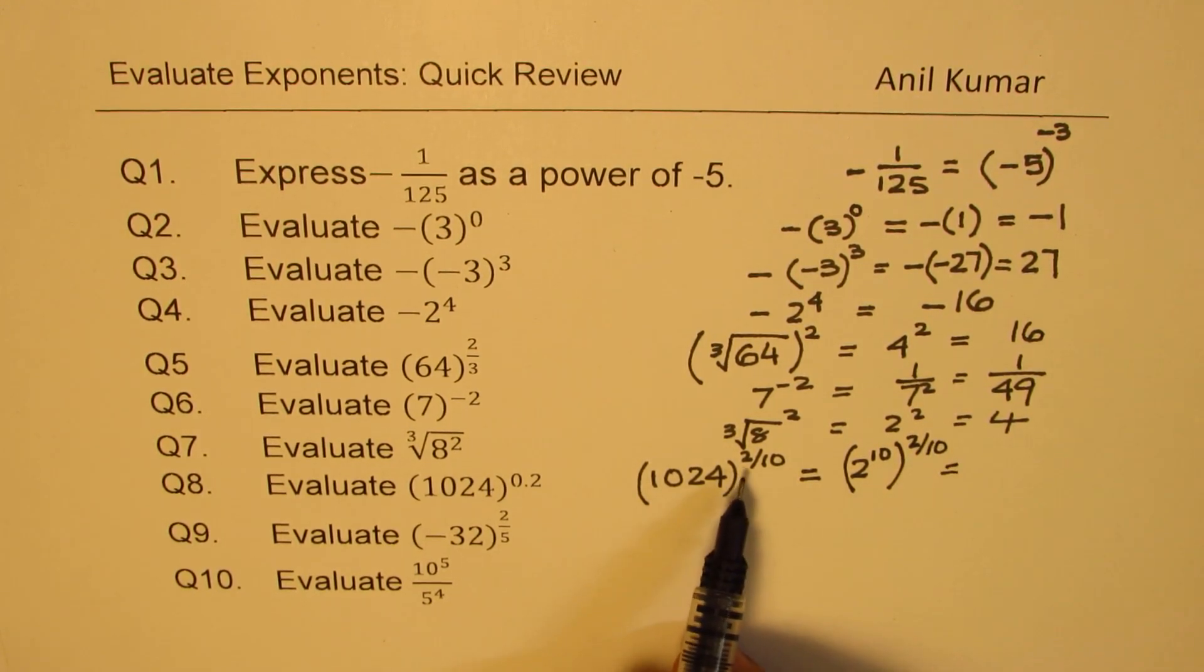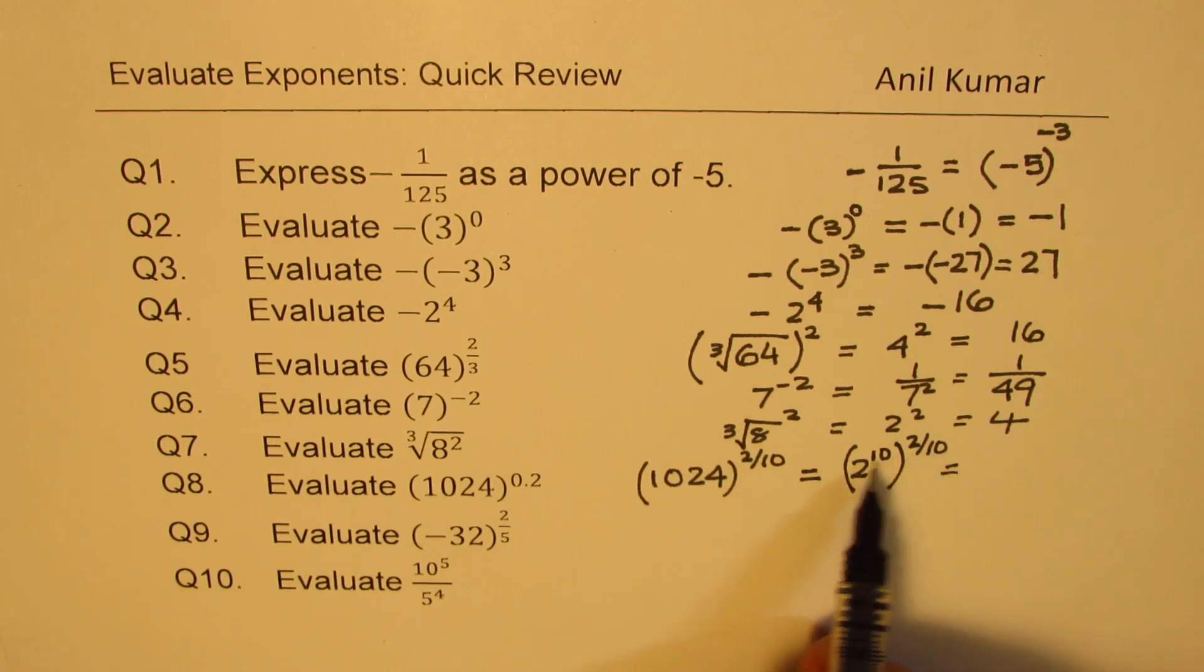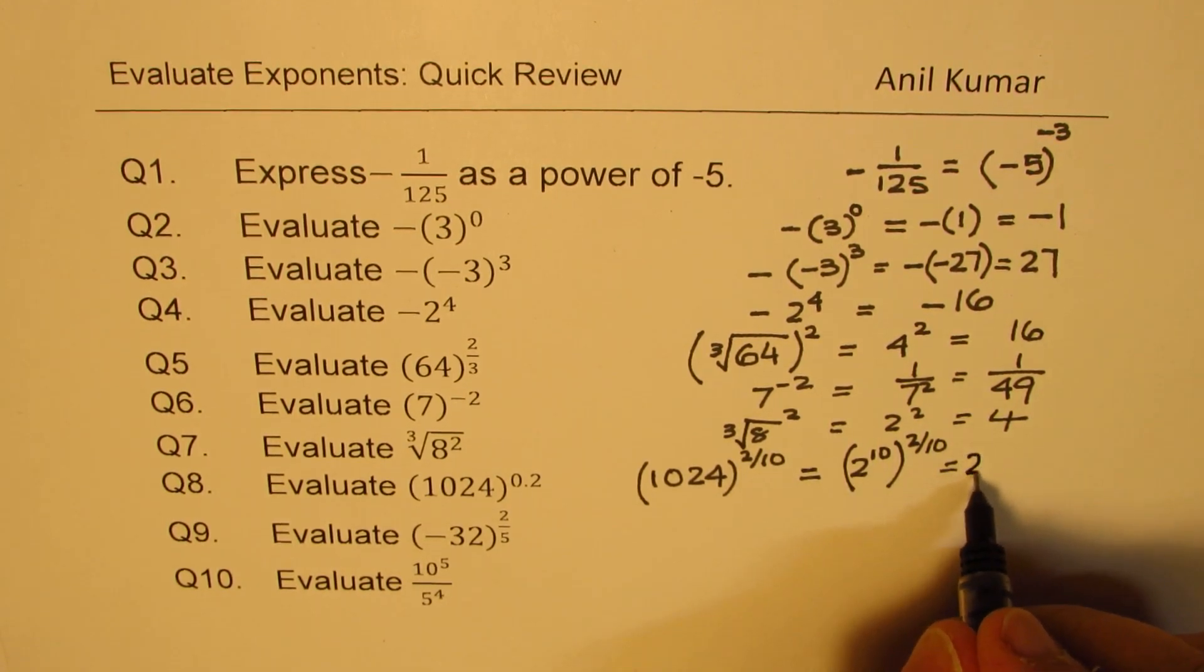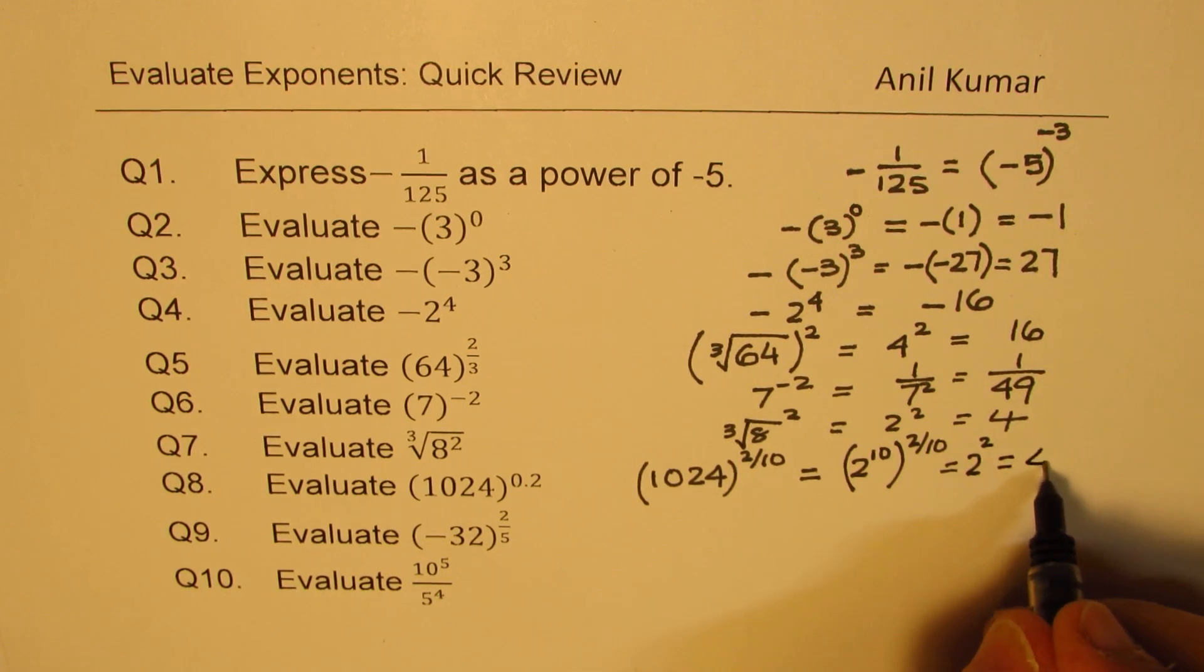Now 1024 is a very important number, and you should remember, it is 2 to the power of 10. So we have 2 to the power of 10 to the power of 2 over 10. I purposely did not write this as 1 over 5 so that I can cancel directly these 10s. So we are left with 2 to the power of 2, which is equal to 4.